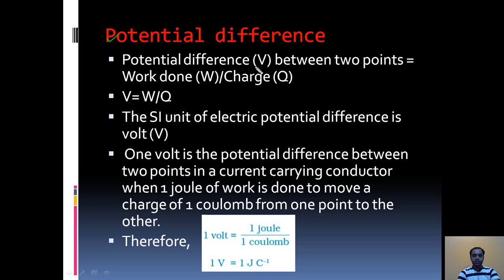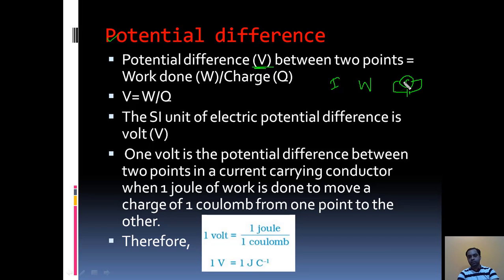Potential difference, which is denoted by the letter V, between two points — what is the potential difference? It is nothing but work done divided by charge. When current I flows through a circuit, it does some work. Suppose a bulb is connected in a circuit; as the bulb is glowing, light energy and heat energy come out. This energy of the battery is utilized to glow the bulb — to do some work. So, work done divided by charge is called potential difference. That is, V = W / Q.